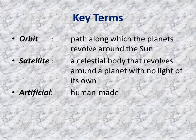Now let us learn about some key terms. Orbit: the path along which the planets revolve around the Sun. Satellite: a celestial body that revolves around a planet with no light of its own. Artificial means human-made.